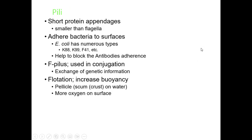Pili are short protein appendages which are smaller than flagella. These adhere bacteria to different surfaces. For example, they are very important for the attachment of the bacteria to the host surface. E. coli has numerous types of pili, for example K88, K99, F41, etc. These also help to block the antibodies' adherence.